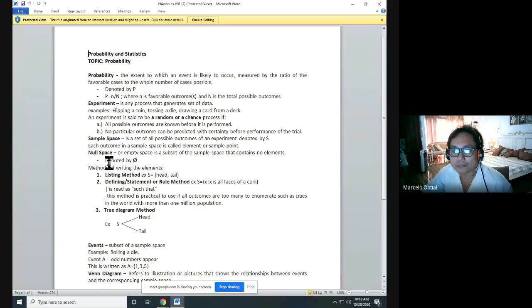Then fourth term, null space or empty space is a subset of sample space that contains no elements. In short, when you encounter a problem or experiment with no answer, you always put this symbol. This is like a zero or capital O with a slanting line. I know some of you already finished tackling null space, but I encourage you to use this symbol.